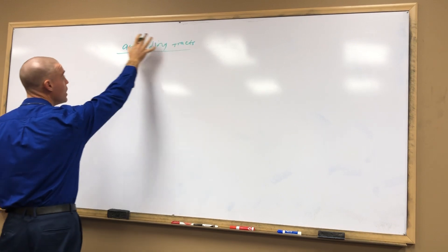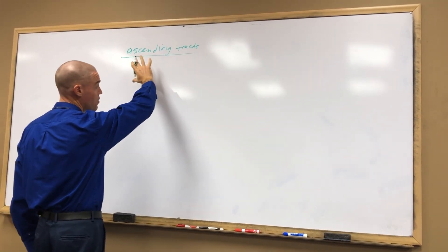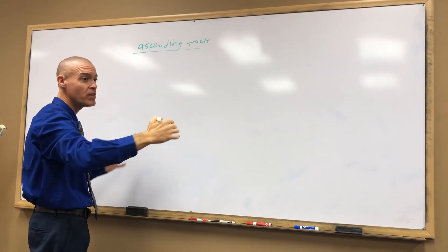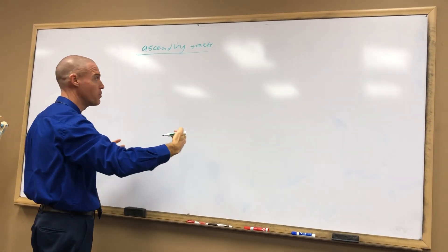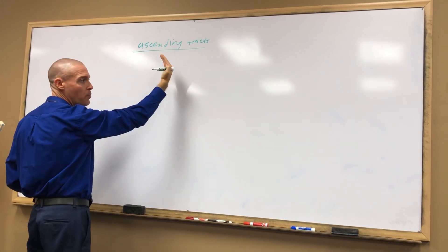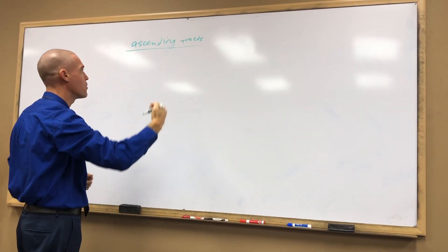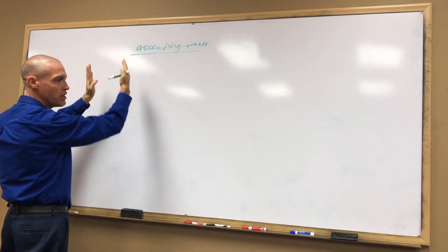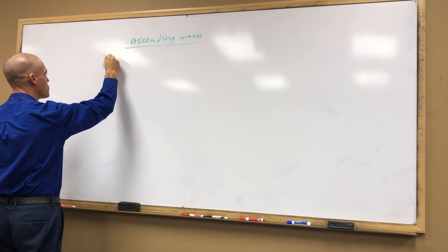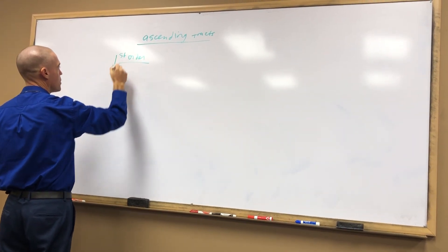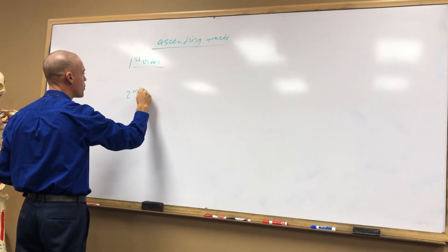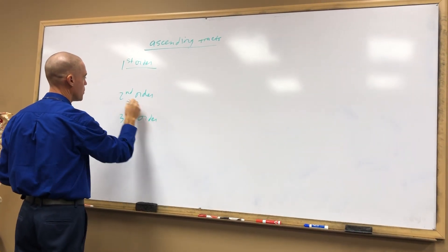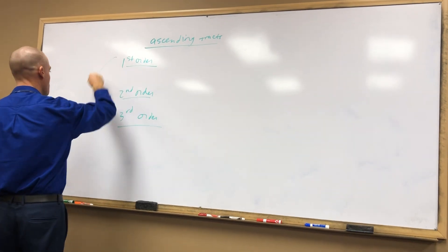This is the entire pathway. We're going to call it the ascending pathway, but really this is the entire sensory pathway. Some of it's going to be ascending as we go up the spinal cord. We've got three neurons that basically control this pathway: first order, second order, and third order neurons.